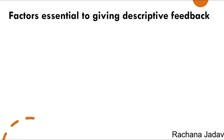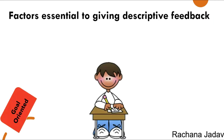The factors essential to giving descriptive feedback are: first, goal-oriented — according to the goal the person wants to achieve, you need to explain the descriptive feedback in a focused, to-the-point manner. Second, actionable — it is understandable and moves in the same direction. You have to show them the direction straight away — where to go, what to do, and what improvement to make.